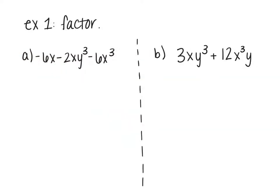So the first example, they just say factor. So the first thing I'm going to check is a GCF. I'm looking for, is there something that -6x, -2xy³, and -6x³ have in common. So first focus on the signs and the numbers. So -6, -2, -6. Well first off, they all have a negative in common, so I can take that out. And they all have a 2 in common. So I'm going to take out a 2.